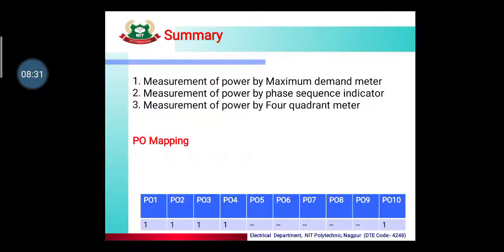In today's lecture we learned about the measurement of power using different meters: the maximum demand indicator, which shows maximum demand; the phase sequence indicator, which indicates phase sequence and is divided into two types — rotating type and static type; and the four quadrant meter (electrostatic watt meter), which measures very small amounts of power. By this, program outcomes PO 1, 2, 3, 4, and 10 are mapped.